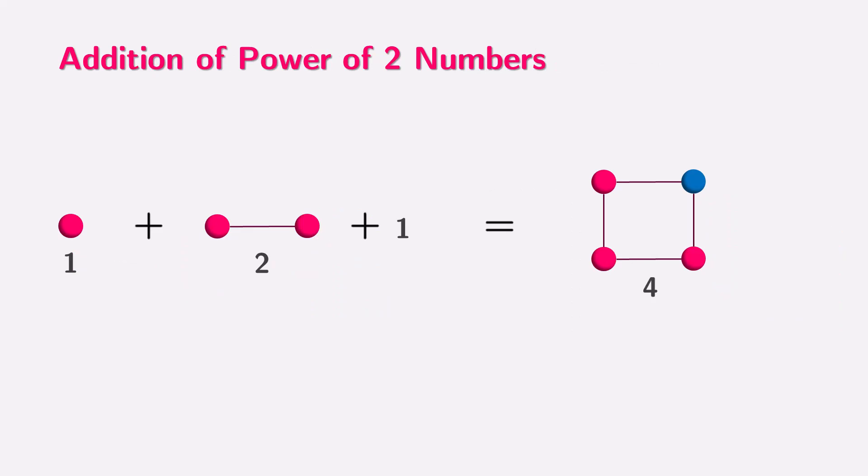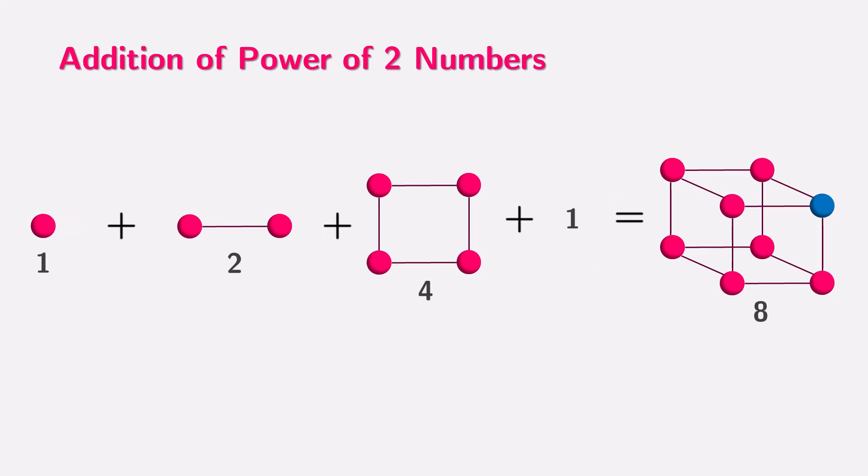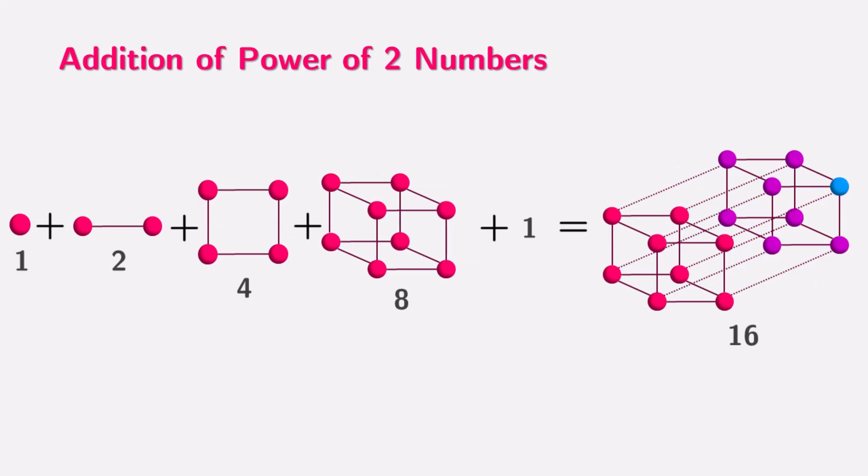When we add powers of 2 numbers, like 1 plus 2, 1 plus 2 plus 4, 1 plus 2 plus 4 plus 8, and so on, and then we add a 1 to the sum, we create numbers like 4, 8, 16, and so on. It's amazing to see that these are the next power of 2 number.